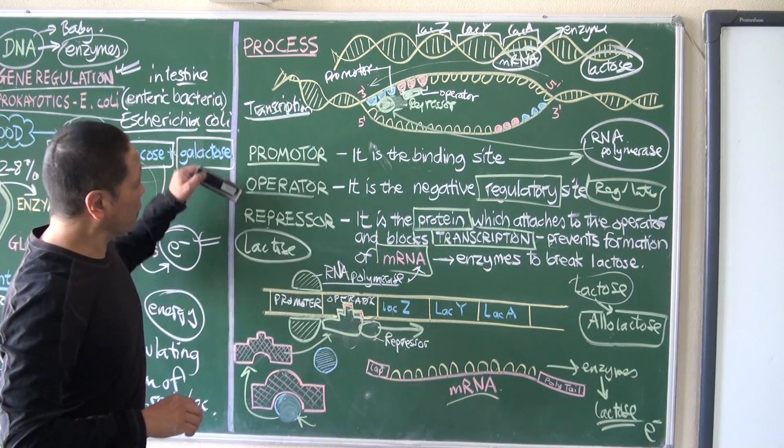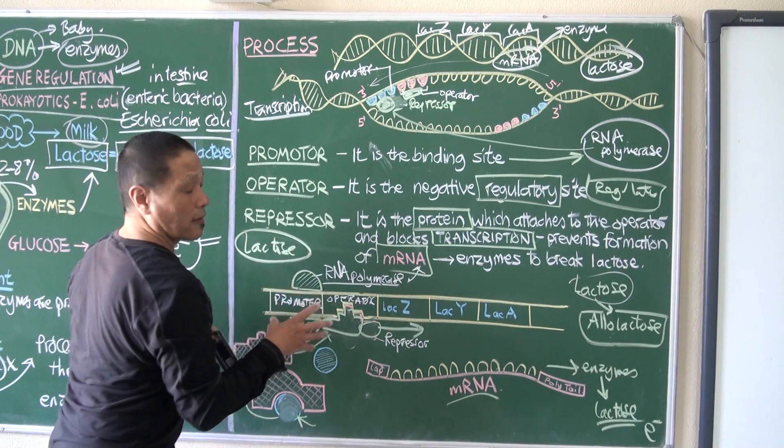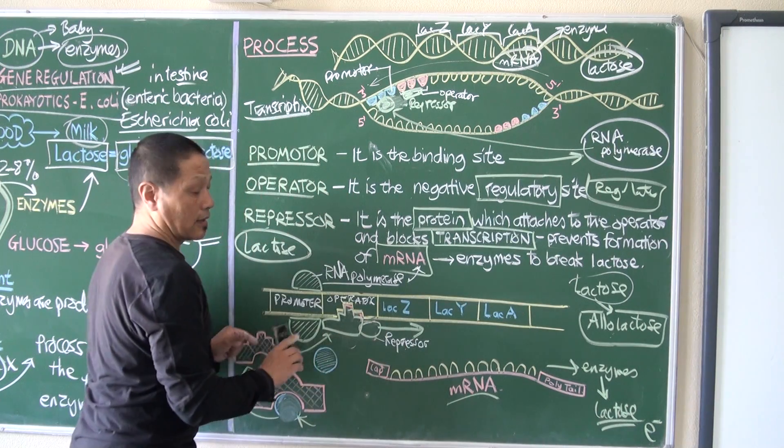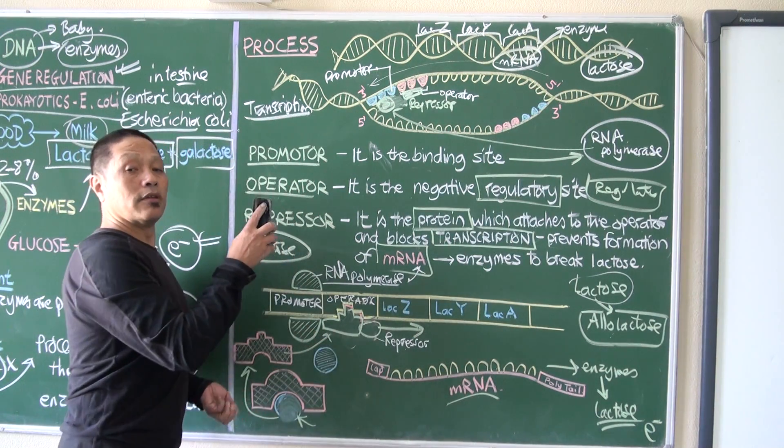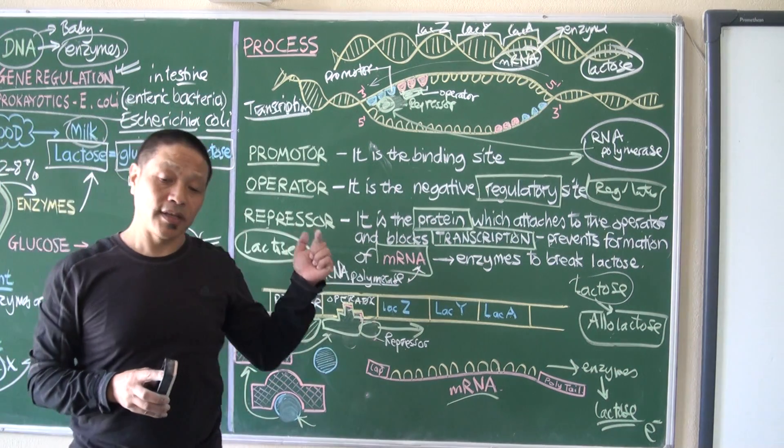So this is the way in which the promoter, operator, repressor controls the copying of the codes that make up the enzyme to break down lactose. So this is what lac operon is all about.